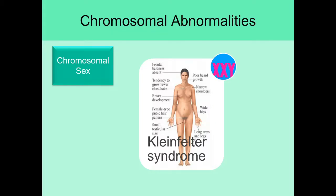That second X chromosome is going to interfere with some of the messages the Y chromosome sends out about beard growth, potential for baldness, hair growing on the chest, and the widening of the shoulders that typically happens at puberty. Generally, a person with Klinefelter syndrome is difficult to distinguish until after puberty because many of these changes come from secondary sex characteristics — the outward characteristics that make a person look masculine or feminine from a distance. The absence of a competing X allows masculinization; here the two Xs competing against the Y results in feminization of the physical form.